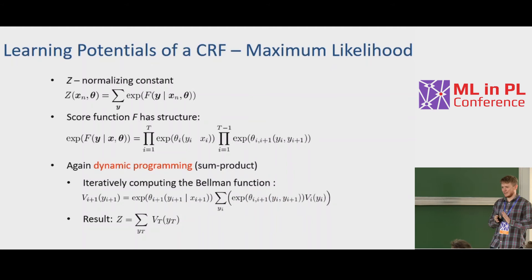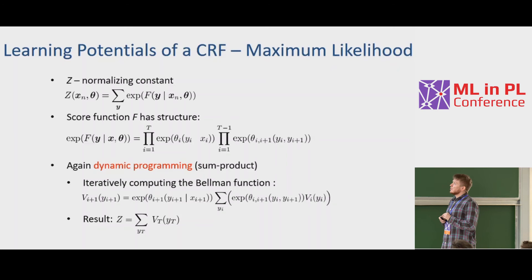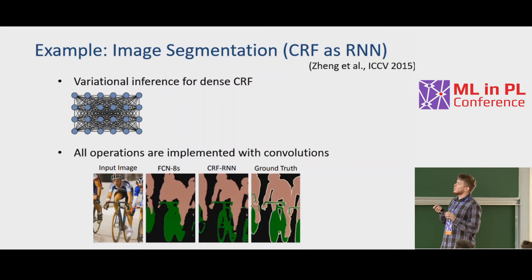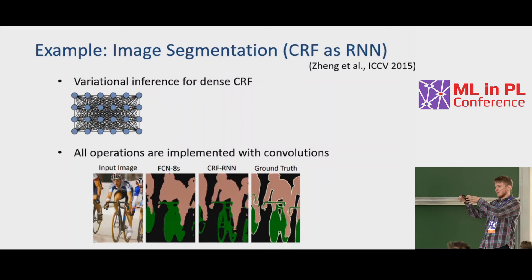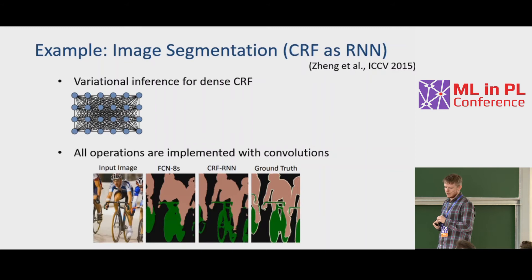This approach was the basis for building a state-of-the-art image segmentation system using dense CRF models, where all pixels are connected to each other. The approach was very competitive at the time, adding a graphical model on top of a state-of-the-art convolutional neural network for image processing.